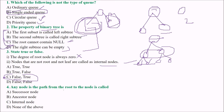Any node in the path from the root to a given node is known as an ancestor node. For example, a node on the path to another node is the ancestor of that node. The answer is ancestor node.